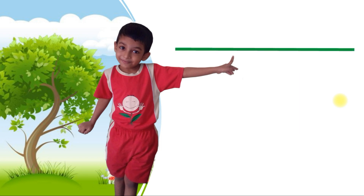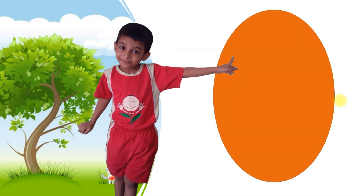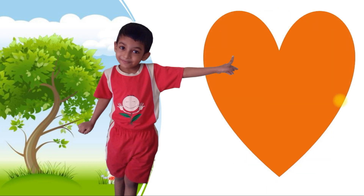Which shape is this? Sleeping line. Very good. Which shape is this? Oval. Good. Which shape is this? Heart.